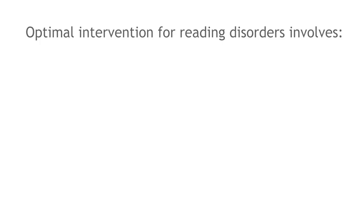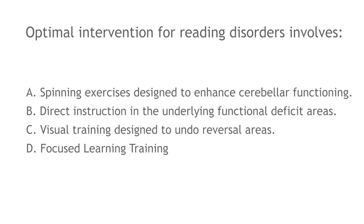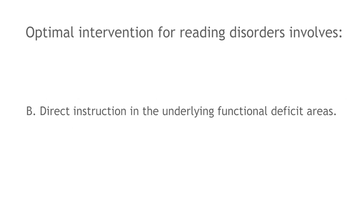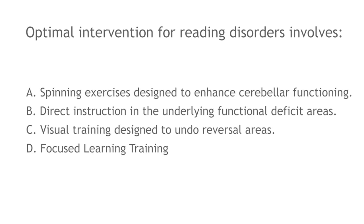Let's practice with a question for specific learning disorder. Optimal intervention for reading disorders involves: Answer A — spinning exercises designed to enhance cerebral functioning; Answer B — direct instruction in the underlying functional deficit areas; Answer C — visual training designed to undo reversal errors; and Answer D — focus learning training. The correct answer is Answer B, as direct instruction has come to replace training in alleged underlying perceptual or sensory-motor processes for reading disorders. Answers A and C are incorrect and are examples of older procedures. Answer D is incorrect and is in fact a distractor term.